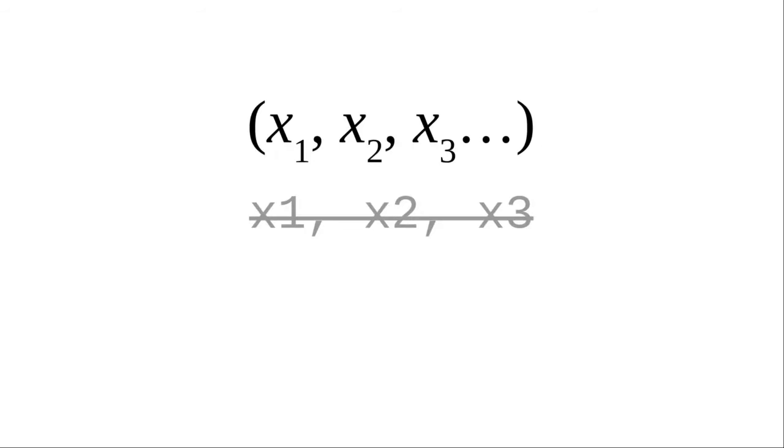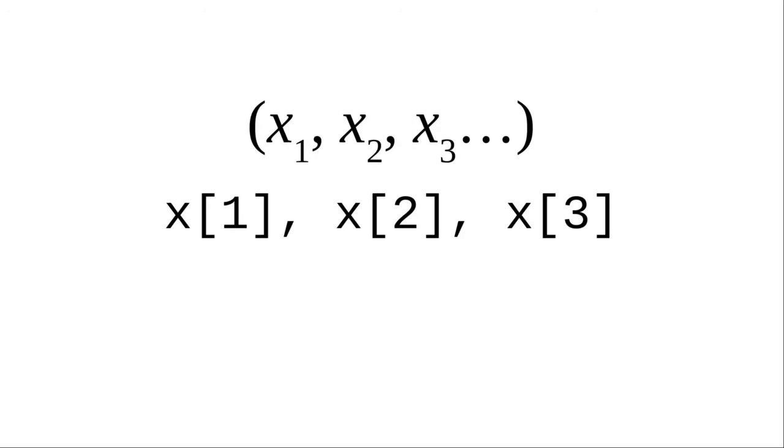Those early programmers came up with a solution. They put the index number in square brackets to represent the subscript. In fact, in a language called FORTRAN, one name for lists was subscripted arrays.